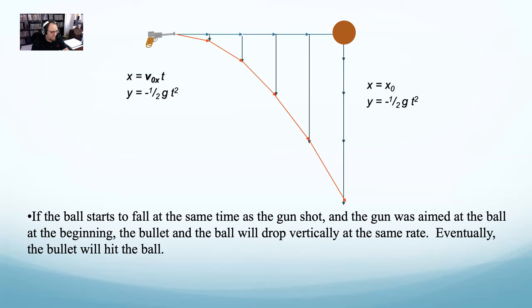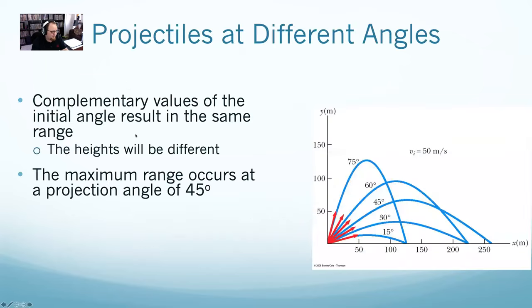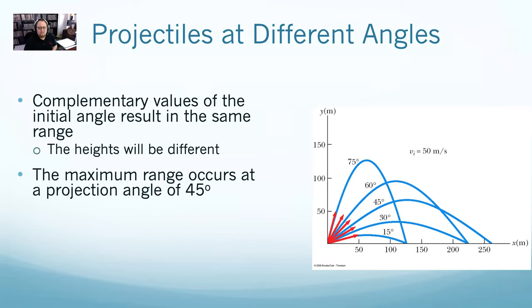A few things to add on projectiles before we do a problem. First, if you want to launch something for max range — assuming no air resistance — it will always be at 45 degrees. But an interesting thing is that complementary angles will have the same range. Complementary angles being two angles that sum to 90 — so 75 and 15 degrees will have the same range, as will 60 and 30. The 75-degree launch will spend more time in the air, but both will have the same total distance in X.